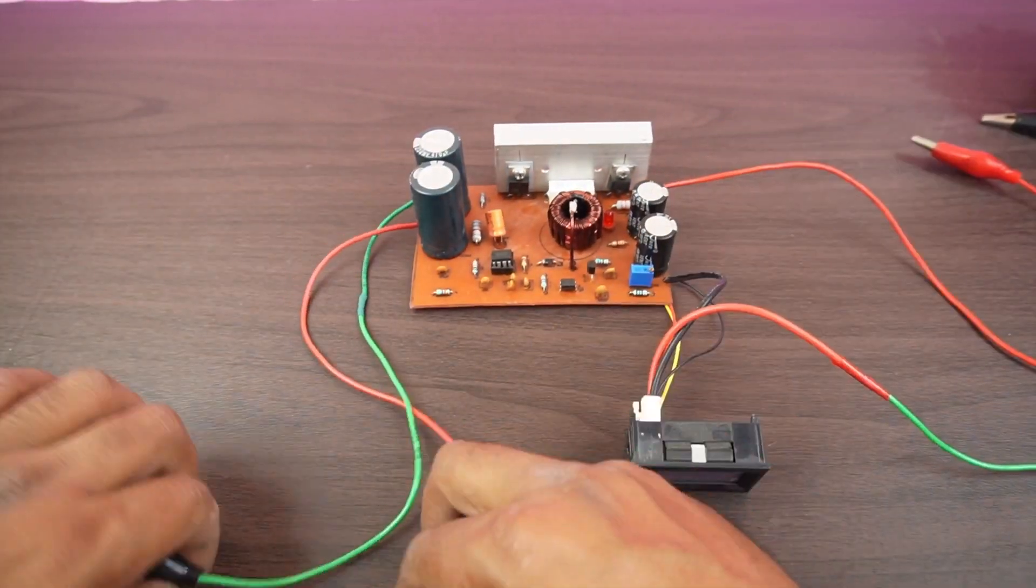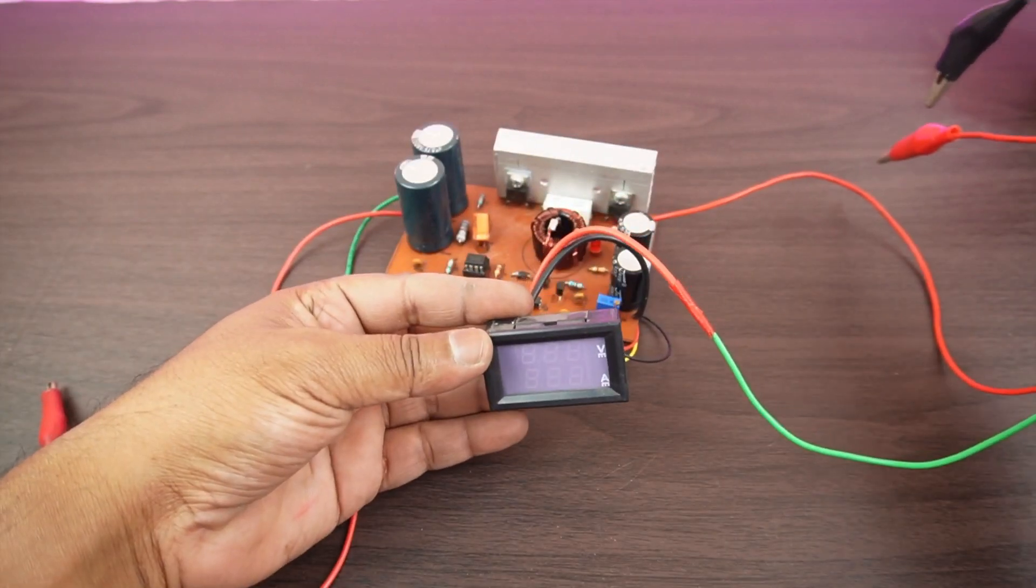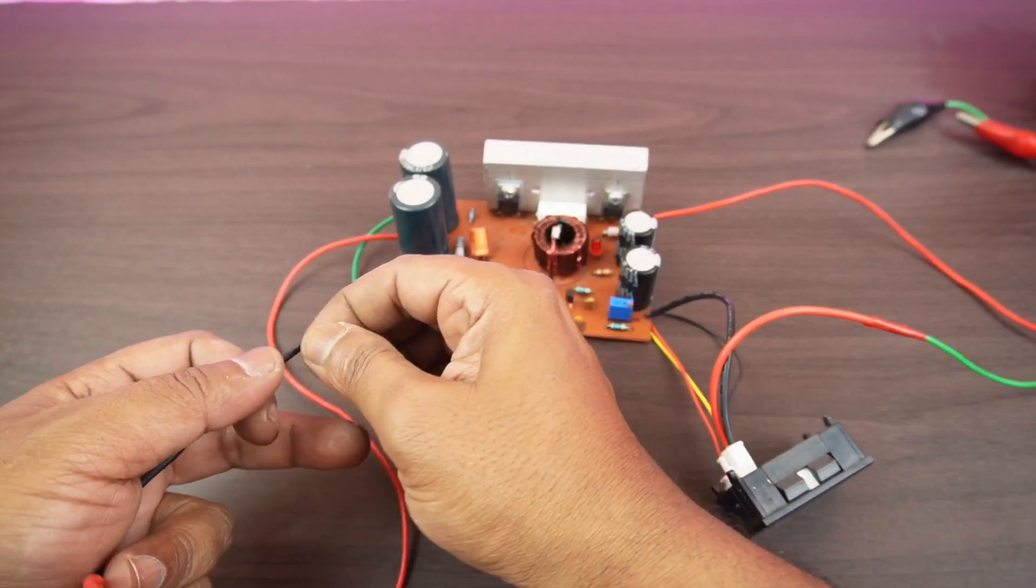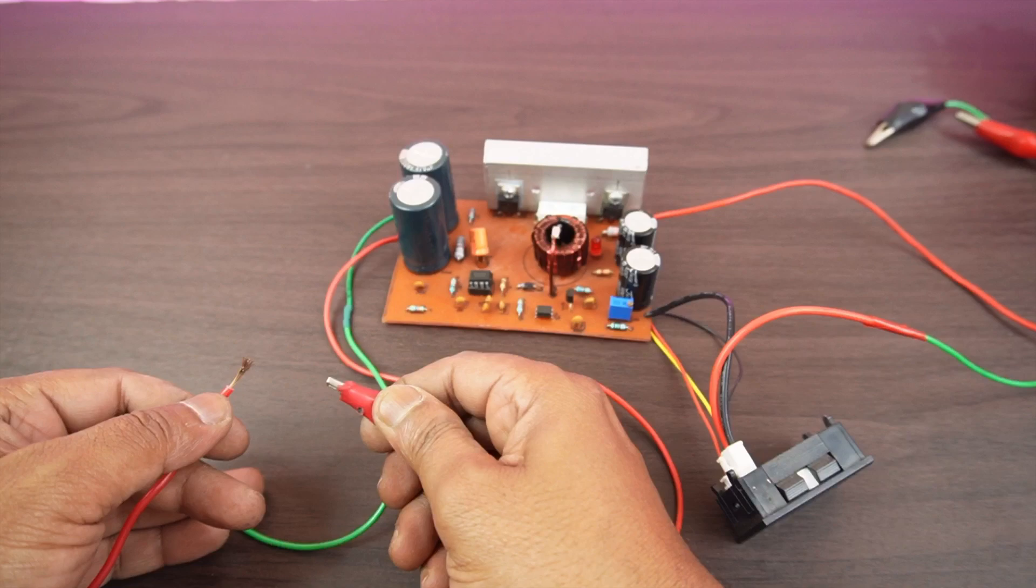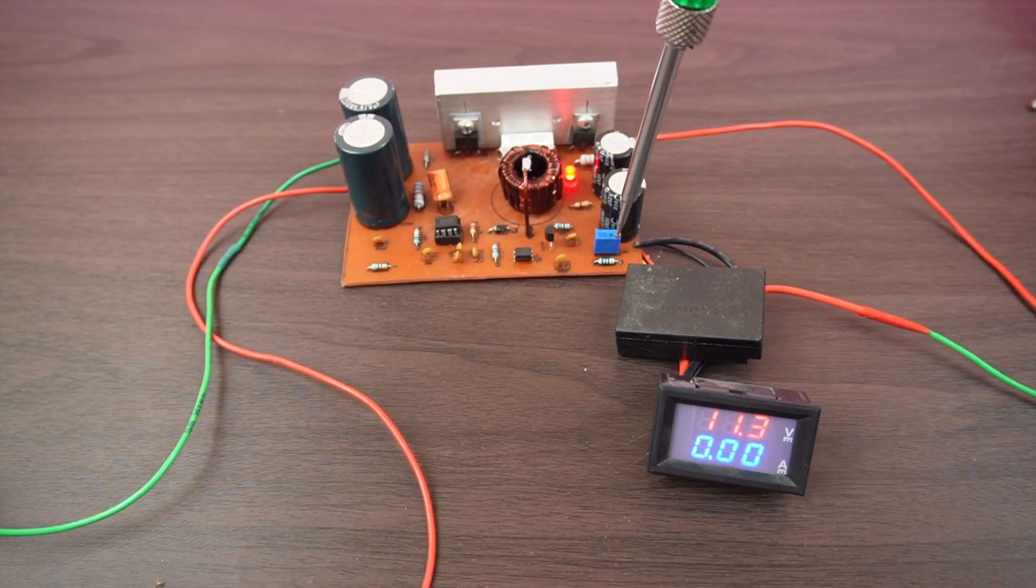Input and output wire is now connected. I have attached a volt amp meter to the output side. Now connecting the input wire to the power source. Now rotate the potentiometer to adjust the voltage as you need.